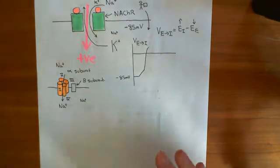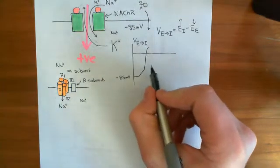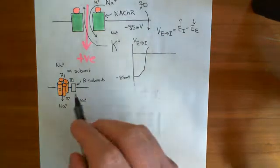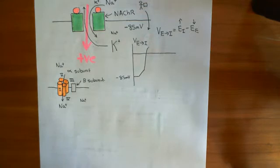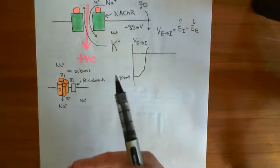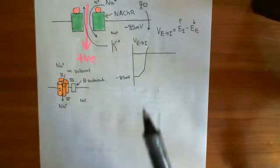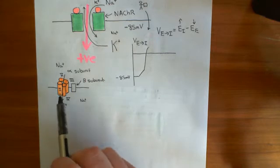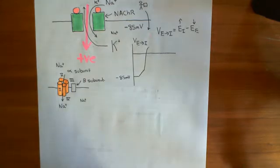That steep depolarization is known as the upstroke of the action potential. What will happen next is that these voltage-gated sodium channels remain open for a little while, but after that they start to inactivate — they start to close.